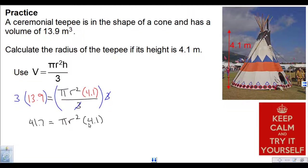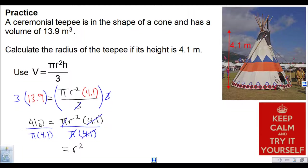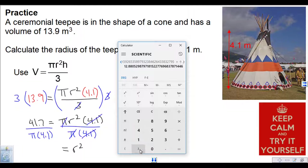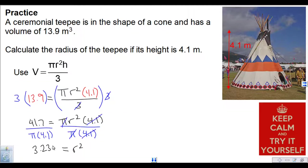We want to get rid of both pi and 4.1 — they're both multiplying — so we divide them away on both sides. The pi's divide out and so do the 4.1's, leaving r squared. We figure out 41.7 divided by, in brackets, pi times 4.1, close the bracket — that's 3.237.